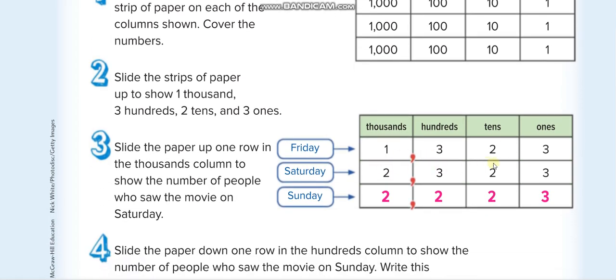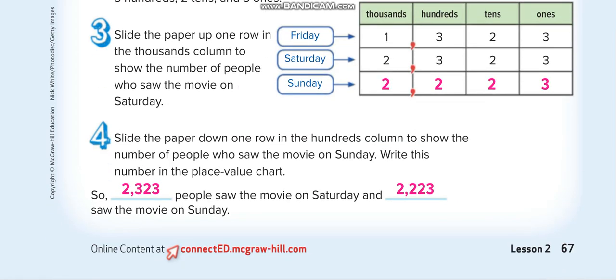So on Sunday we will minus 100 from this. If you minus 100 from 2,323, it will become 2,223. From 100 you minus 1. Okay, let us move to the next page. This is the answer: 2,223.